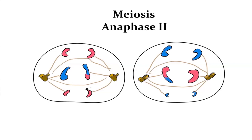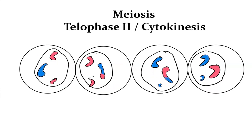After metaphase II, we get into anaphase II — the sister chromatids are dragged to each side of the cell, with their arms being dragged behind them, being pulled by the center at the kinetochore. Then we have telophase II, where the nuclear envelope reforms around the chromosomes, and cytokinesis occurs — the cleavage furrow forms and then eventually the separation of the cells.